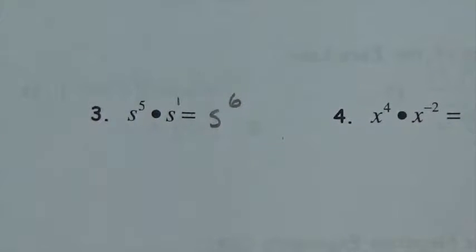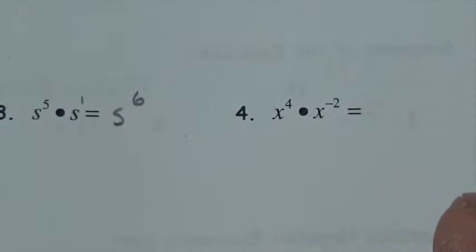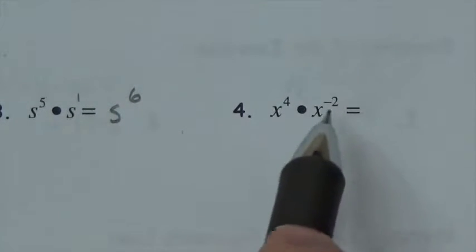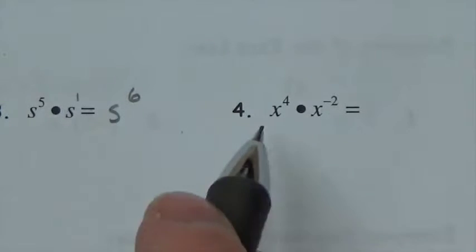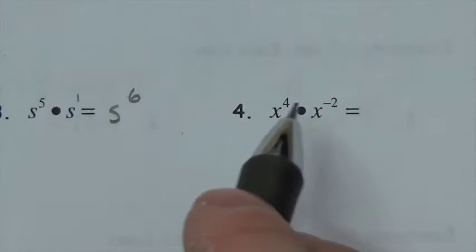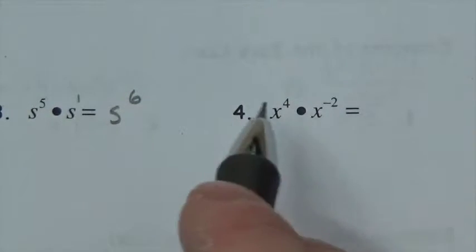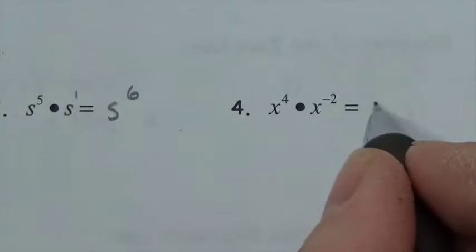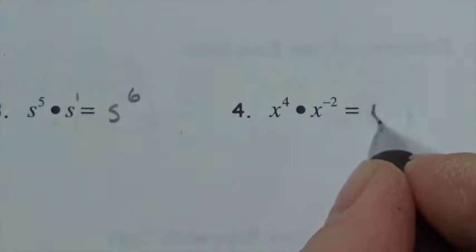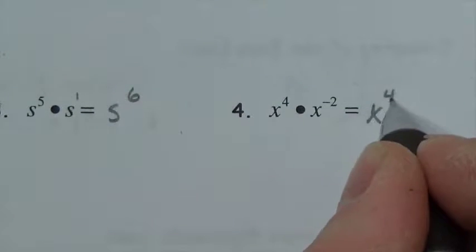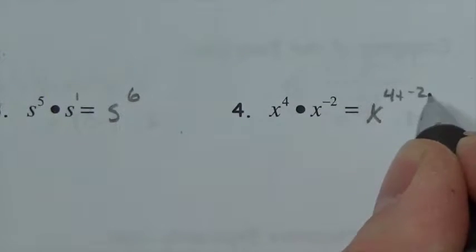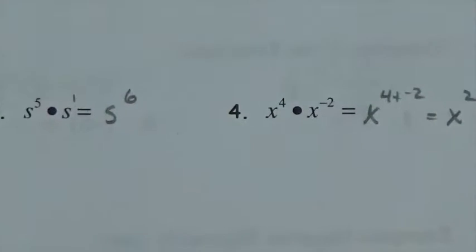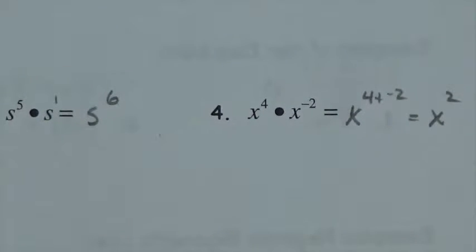For x to the fourth times x to the negative two, it doesn't matter that one exponent is negative — we still add them. Four plus negative two gives two, so the result is x squared.